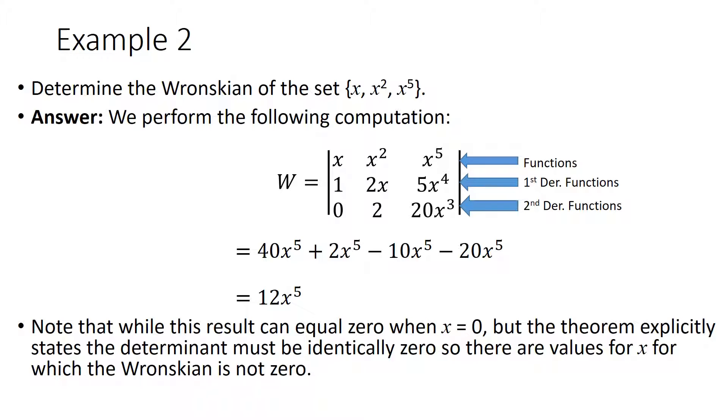Note that while this result can equal zero when x equals zero, the theorem explicitly states the determinant must be identically zero. So there are values for x for which the Wronskian is not zero. So you can have specific x values that make a Wronskian zero, but the theorem specifically states that you should not have to do that. If you want the Wronskian to be zero, it should be identically zero.